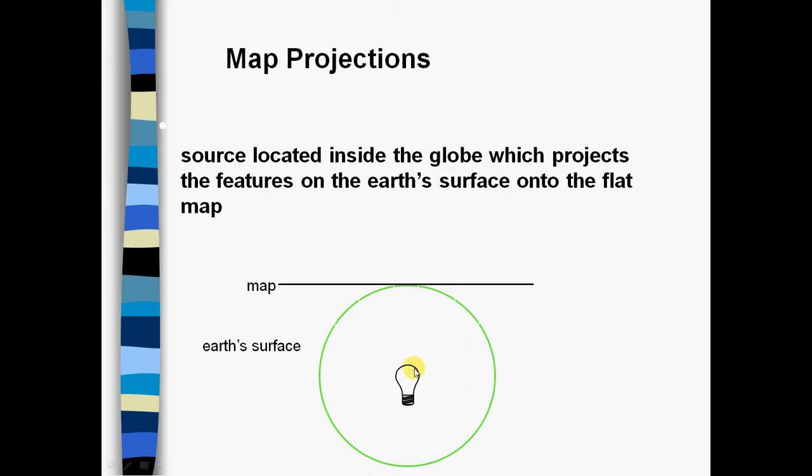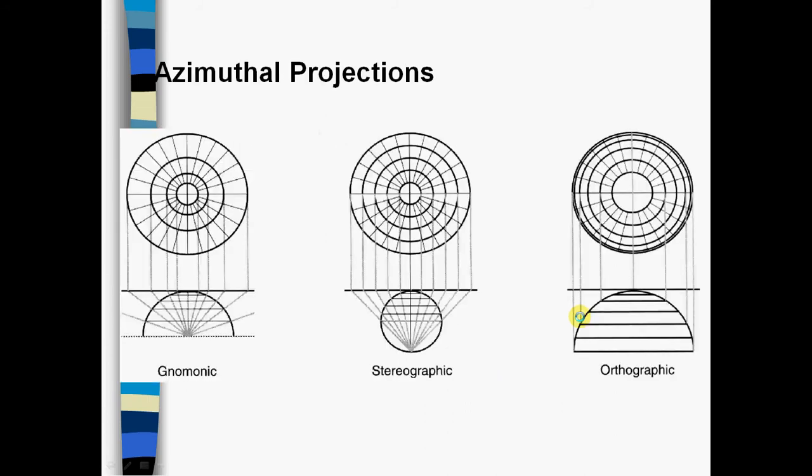However, if a lightbulb shines out in this direction and shines this portion of the earth onto this portion of the projected plane, there will be distortion. And that's the important fact about map projections: there is always some distortion.